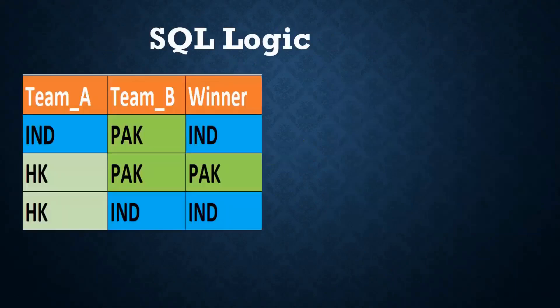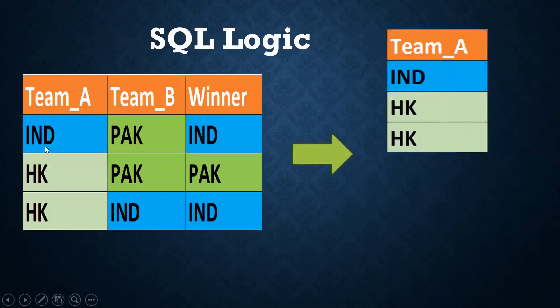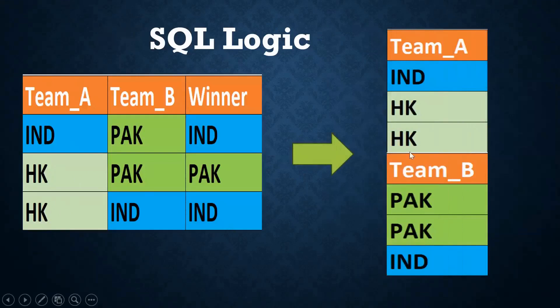Now we will see the logic. When we get any requirement, we need to understand the logic first. I am taking team A — India, Hong Kong, Hong Kong. In a similar fashion, I am taking team B — Pakistan, Pakistan, India. I am clubbing these into a single form. By doing this, we can get the total number of matches played by each country.